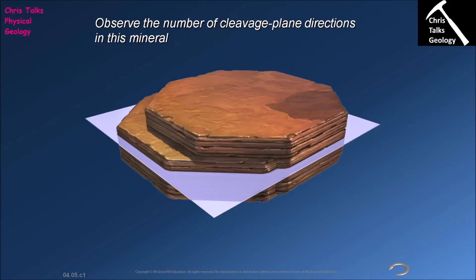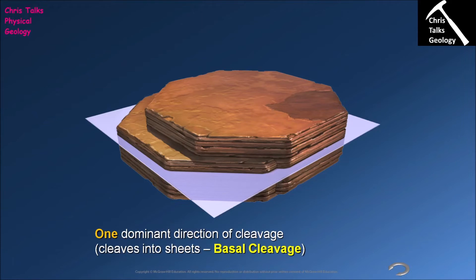Here's our first type of cleavage. The cleavage plane is marked out by a gray square. You can see the mineral has a stacked appearance almost like pages in a book, and the cleavage planes run all the way through it, all parallel to each other. In this case we only have one cleavage plane, and when we break the mineral it will preferentially fail along one of these planes. A mineral with one dominant direction of cleavage is said to have basal cleavage.